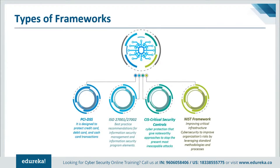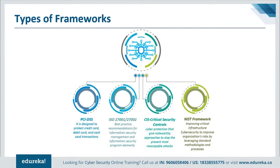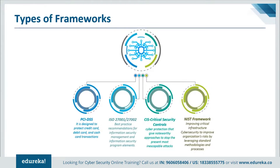The second type of framework is ISO 27001 and 27002, from the International Organization for Standardization. It provides best practices recommendations for information security management and information security program elements. The third type is CIS — Critical Security Controls — a prescribed arrangement of activities for cyber protection that provides specific approaches to stop the most prevalent and dangerous attacks, prioritizing fewer activities with high outcomes.